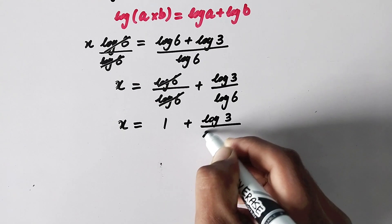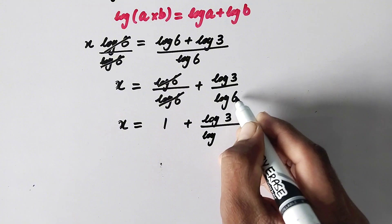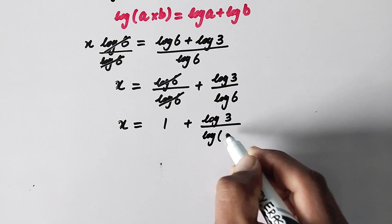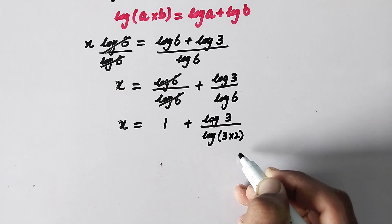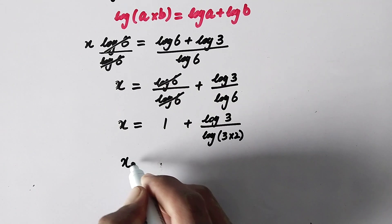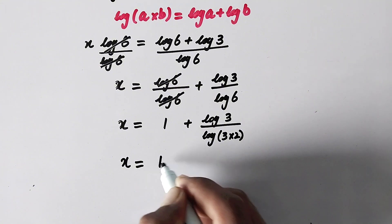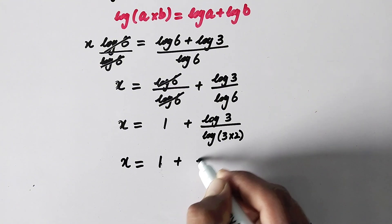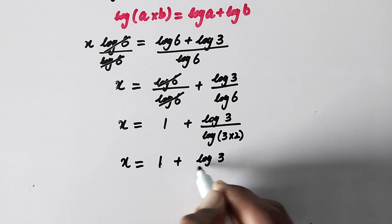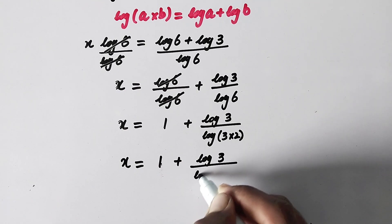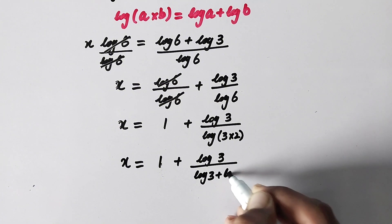The remaining is x equal to 1 plus log of 3 over log of 6, which is the same as 3 times 2.